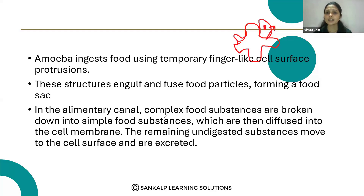In the alimentary canal, complex food substances are broken down into simple food substances, which are then diffused into the cell membrane. The remaining undigested substances move to the cell surface and are excreted.